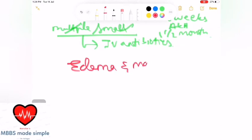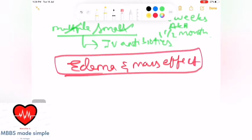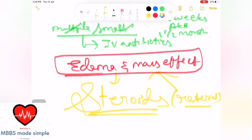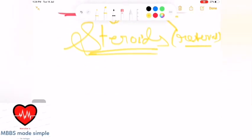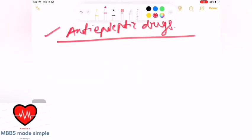Next important point: edema and mass effect. Steroids are reserved drugs only for edema and mass effect. Edema and mass effect increase seizure risk, so anti-epileptic drugs are given. This is all about brain abscess.